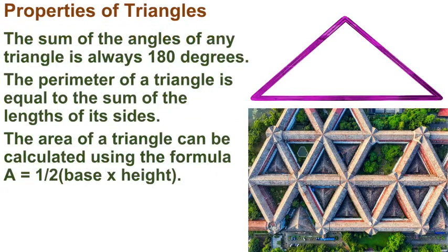Properties of Triangles. The sum of the angles of any triangle is always 180 degrees. The perimeter of a triangle is equal to the sum of the lengths of its sides. The area of a triangle can be calculated using the formula A equals one-half base times height.